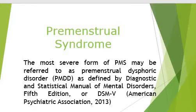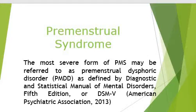Continuous fatigue, severe pain, and bloating may be present. The symptoms generally begin the week before menstruation and end after menstruation has begun. The treatment involves the use of antidepressants, especially SSRIs. There is a particular diagnostic criteria mentioned in the next slide according to the DSM-5.